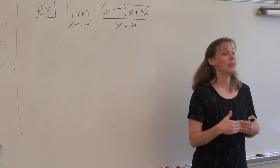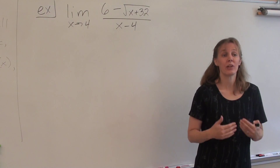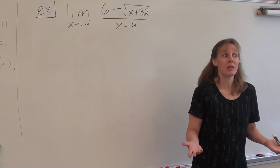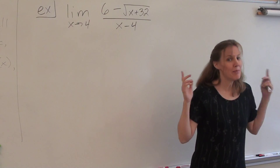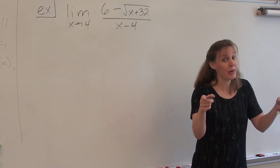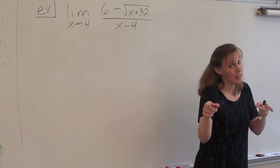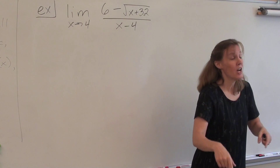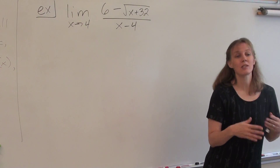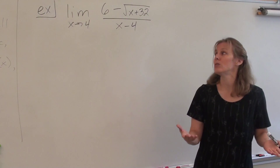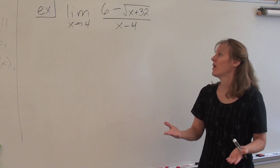Yeah, you get zero over zero. And zero over zero in limit world means what? It means keep going — that limit exists. So the limit exists, and now what we need to do is figure out how to find it.